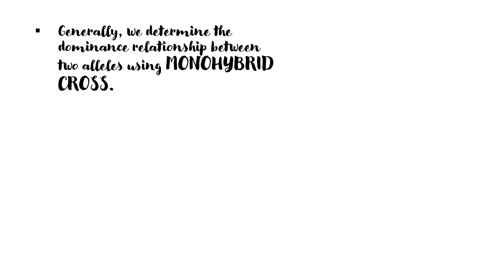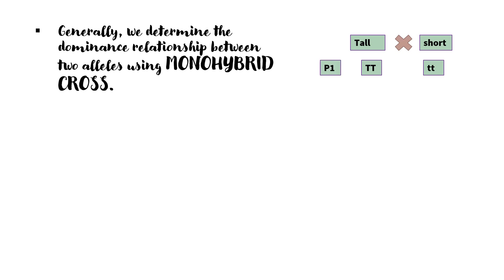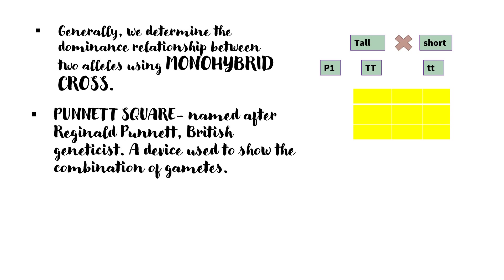We determine the dominance relationship between two alleles using a monohybrid cross. For instance, a tall plant is pollinated with a short plant. Their genotypes are homozygous tall (TT) and homozygous short (tt) — that will be our P1, or first parental generation. We then draw a Punnett square, named after Reginald Punnett, a British geneticist. It is a device used to show the combination of gametes. We write the male gametes on one side and the female gametes on the other side.